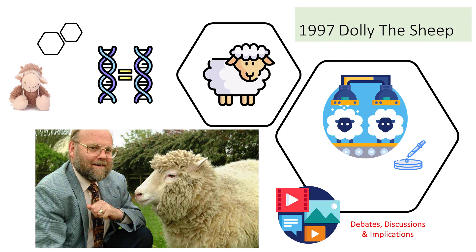Debates, discussions and implications including ethical considerations started when Dolly, the first mammal cloned from an adult cell, was born. It took 277 attempts to clone Dolly, and for a while she was arguably the world's most famous sheep. The birth of Dolly and the new understanding of the opportunity to change the functioning of cells made researchers consider other possible ways of modifying cells.